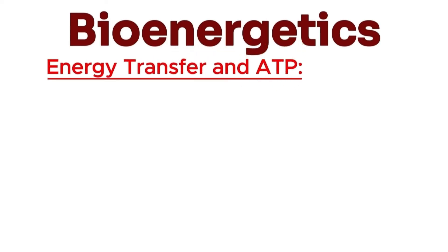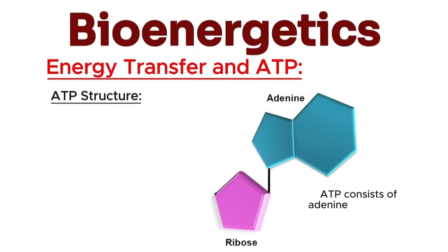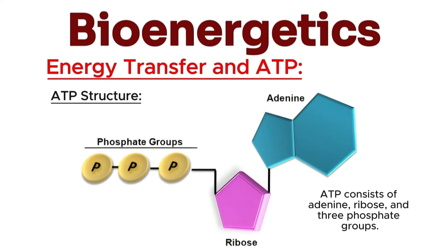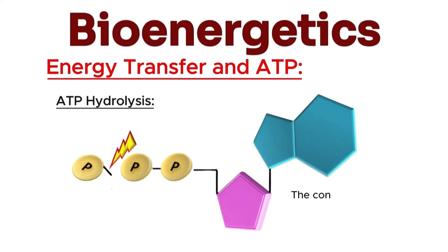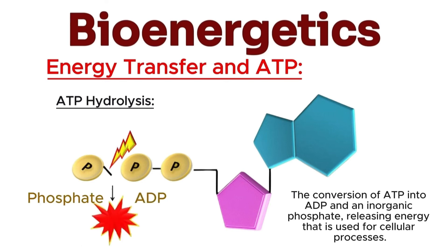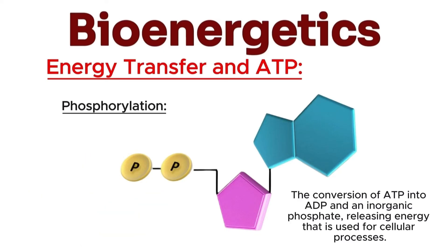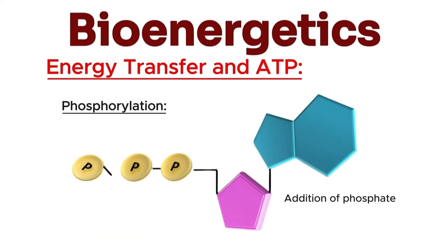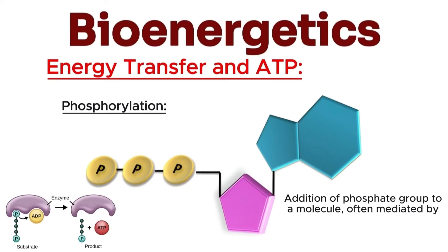Next is energy transfer and ATP. ATP consists of adenine, ribose, and three phosphate groups. ATP hydrolysis is the conversion of ATP into ADP and an inorganic phosphate, releasing energy that is used for cellular processes. Phosphorylation is the addition of a phosphate group to a molecule, often mediated by enzymes, to transfer energy and activate molecules.